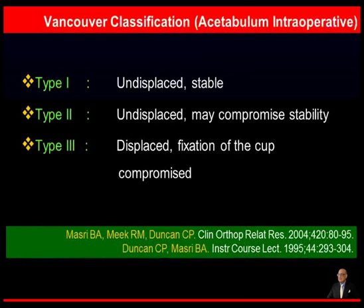The Vancouver classification for acetabular fractures covers fractures that largely occur intraoperatively. Type 1 is an undisplaced fracture which is stable. Type 2 is an undisplaced fracture but may compromise stability of the implant. Type 3 is a fracture that is displaced and the fixation of the cup is definitely compromised.